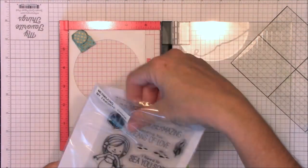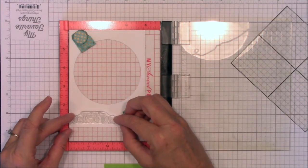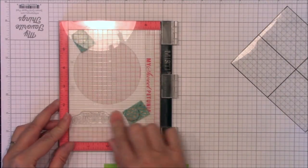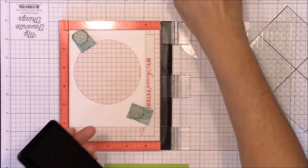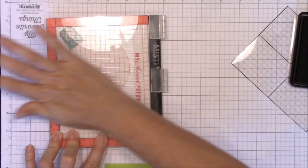I'm placing the sentiment from the Mermazing stamp set into my mini MISTI and I'm stamping it onto the lower left corner of the image panel using Black Licorice hybrid ink. I give it some really firm pressure with the palm of my hand to make sure all the ink transfers.